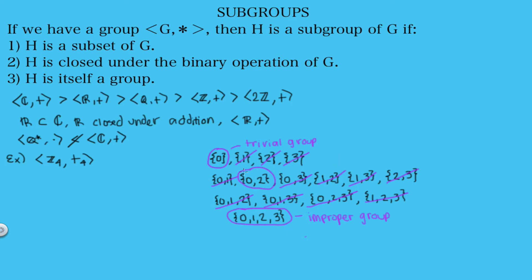This group also had one proper non-trivial subgroup: the set {0, 2} with addition modulo four. It's helpful to write a diagram showing the chain of subgroups. In this diagram, ℤ₄ is on top, below it is the subgroup {0,2}, and below that is the trivial group {0}. This shows that {0} is a subgroup of {0,2}, which is a subgroup of ℤ₄, and therefore {0} is also a subgroup of ℤ₄.